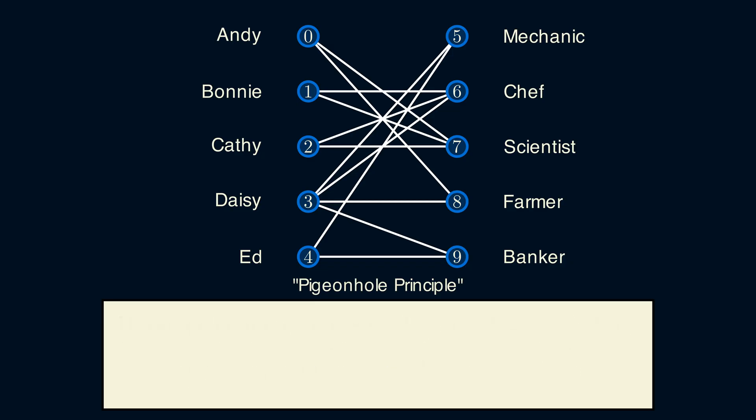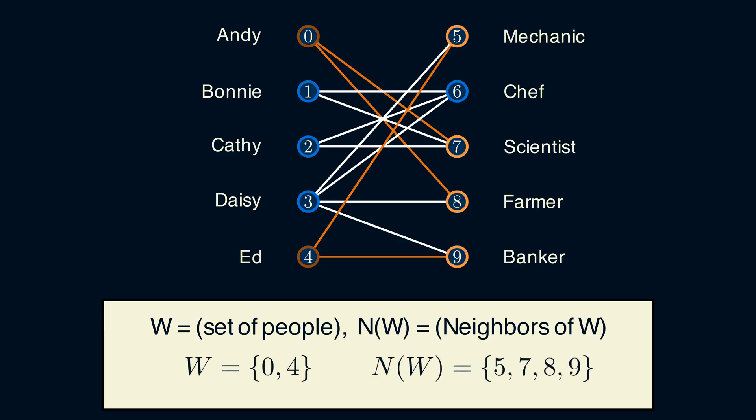We can also write this condition mathematically. Let W be a set of people. We can define the neighbors of W to be all of the jobs the people in W have as options. For example, here W is 0 and 4, so that's Andy and Ed, and the neighborhood of W is 5, 7, 8, and 9. Here's another example. W is 1 and 2, and the neighborhood of W is 6 and 7.